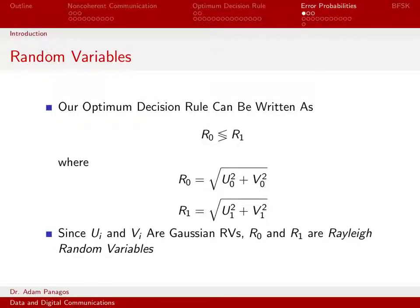So now that we've justified why we use the largest statistic decision rule, let's go ahead and start actually computing system performance. Let's actually compute some error probabilities.